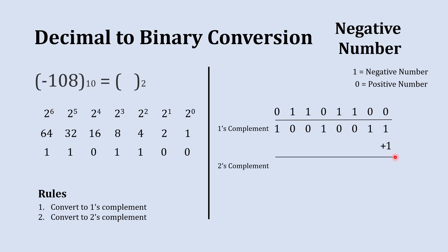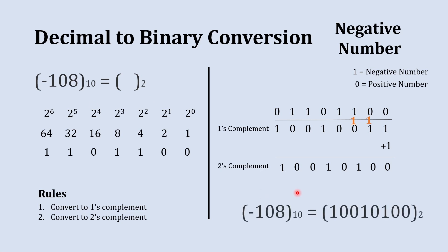Now it's time to take the 2's complement by adding plus 1. 1 plus 1 gives sum 0 with carry 1; again 1 plus 1 gives sum 0 with carry 1; then 1 plus 0 gives 1; the rest of the bits remain as 1, 0, 0, and 1. So this number is the binary equivalent to minus 108.